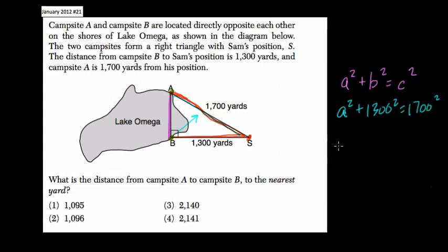That means A squared equals 1,700 squared minus 1,300 squared. Therefore, A equals the square root of 1,700 squared minus 1,300 squared.